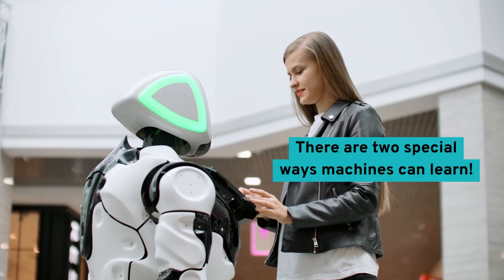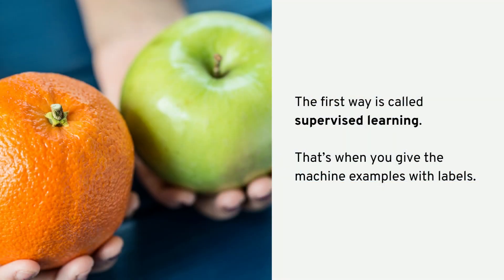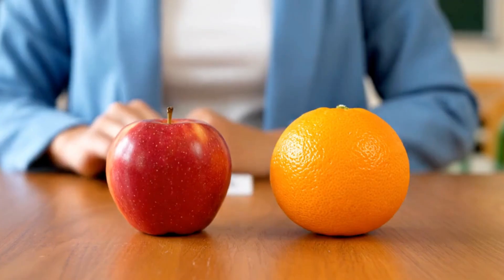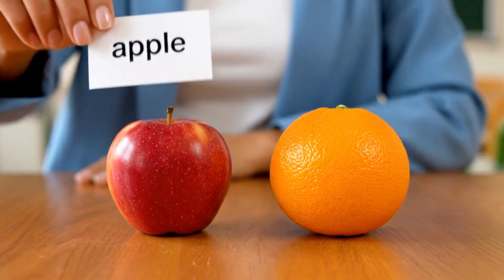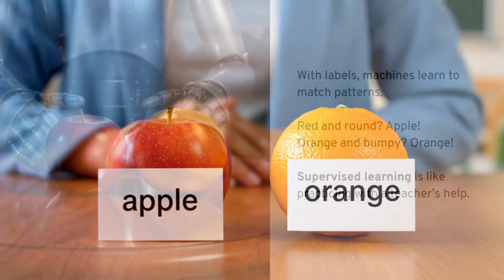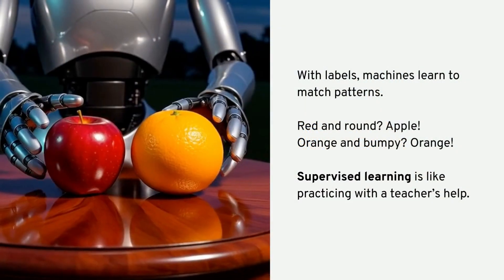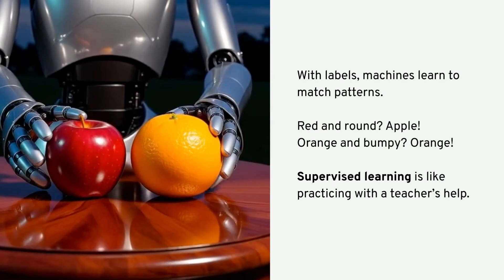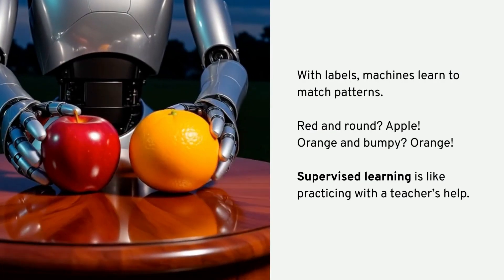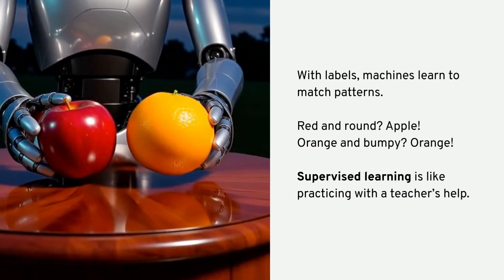The first way is called supervised learning. That's when you give the machine examples with labels — this is an apple, this is an orange. With labels, machines learn to match patterns: red and round means apple, orange and bumpy means orange.